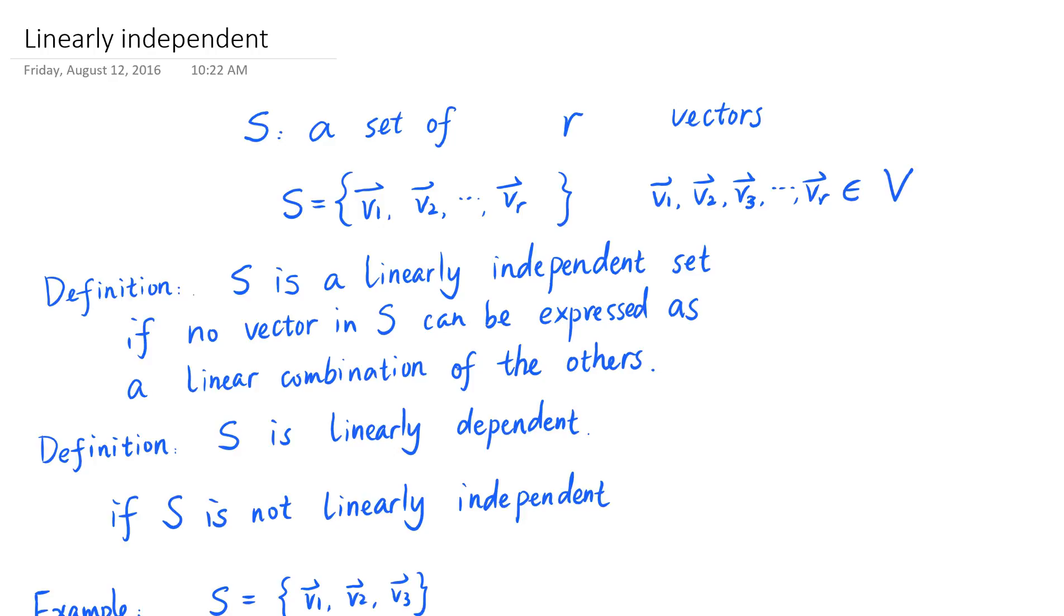So let me quickly go over the two definitions we've seen in this video. Given a finite set of two or more vectors, all the vectors belonging to the same vector space, the set is said to be a linearly independent set if none of the vectors in the set can be expressed as a linear combination of the rest of them.